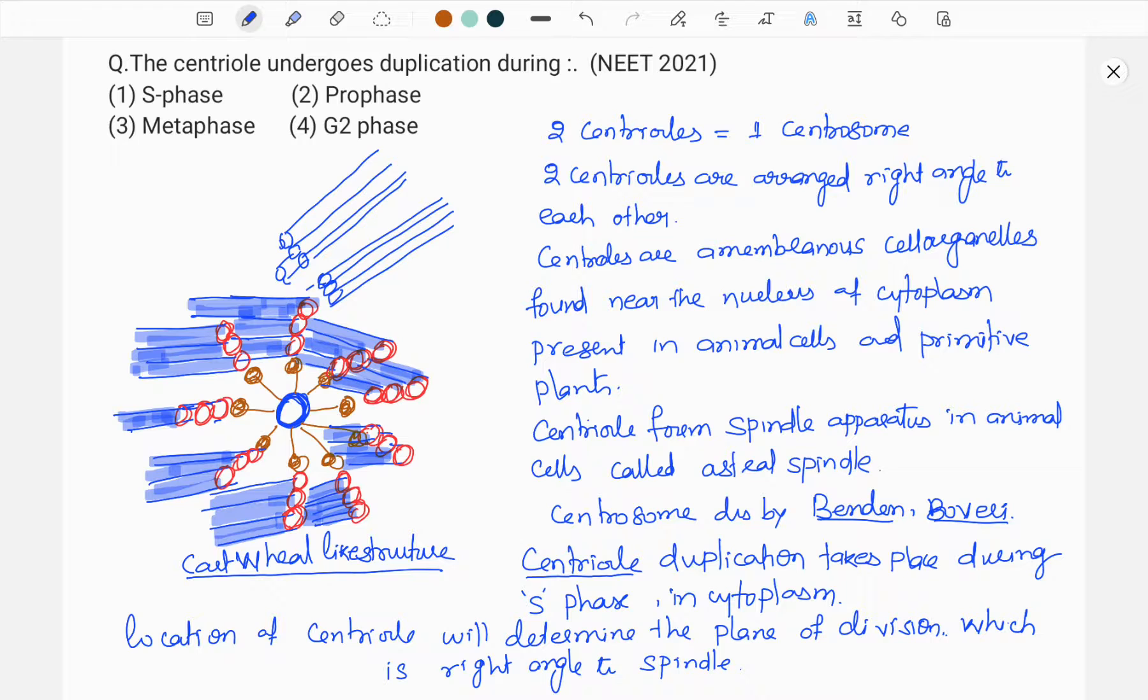And here we find nine triplets are arranged to the proteinaceous central hub by means of radial spokes. And they are not enclosed by any membrane instead it is enclosed by pericentrioles or matter.